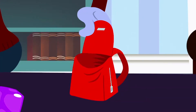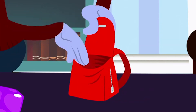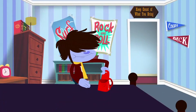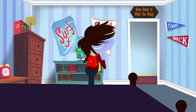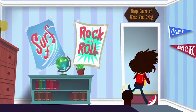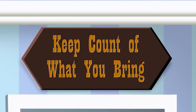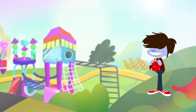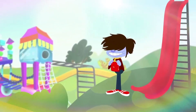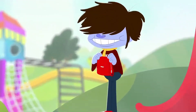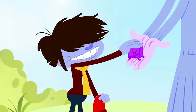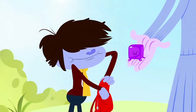Countback Jack has a red backpack that holds most anything. When he leaves for school his rule — keep count of what you bring. He started with sixteen yumis because you know he likes to trade.